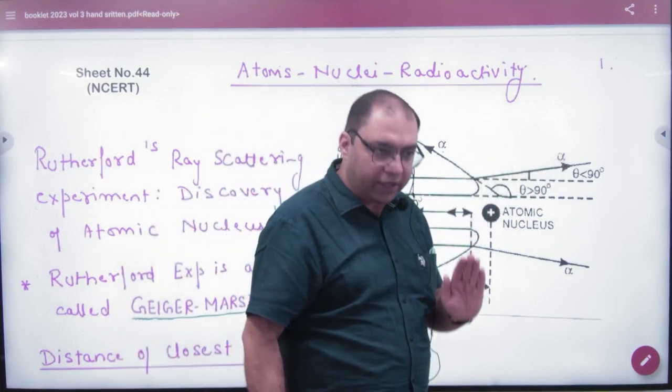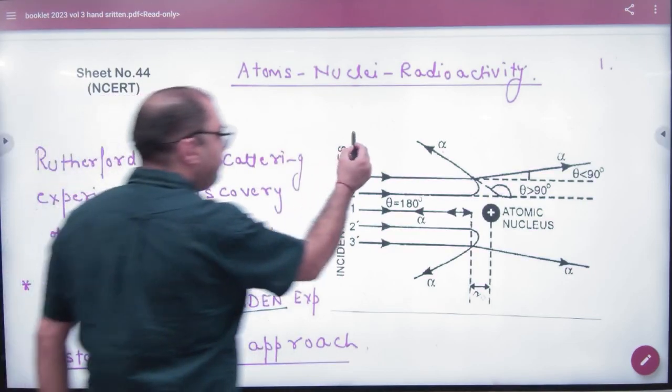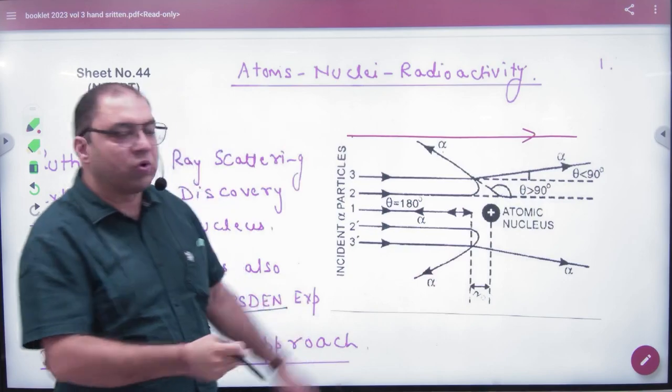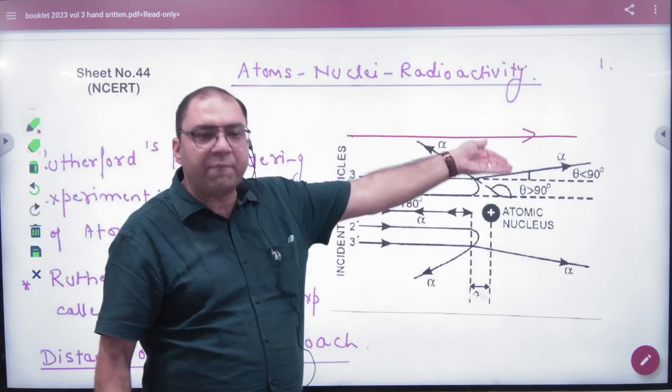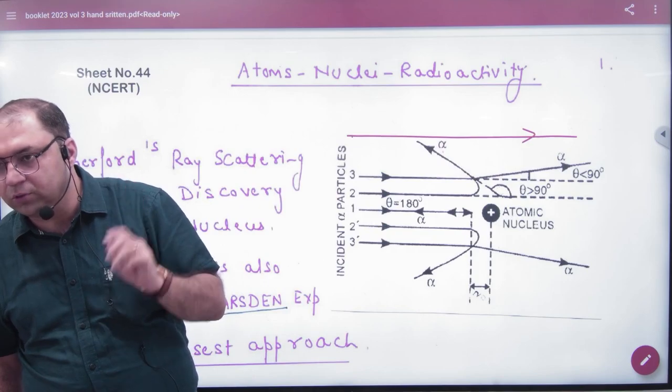Alpha particles are more deflection. Positively charged particles and alpha particles increased so that there is no repulsion.